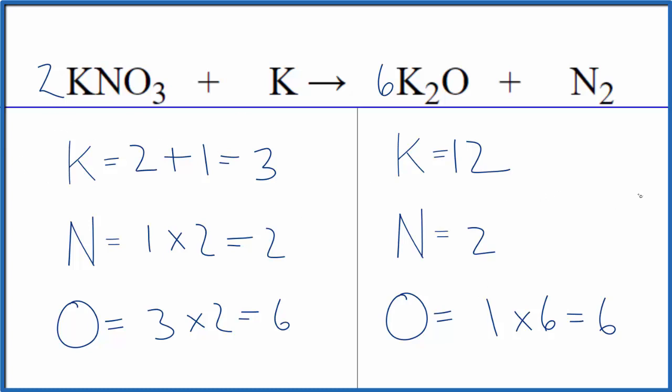We can balance the potassiums thinking about it this way. Two potassiums here plus some number gives us the twelve. Two plus ten, that would give us twelve. We can update the potassiums.